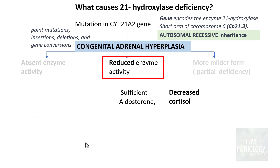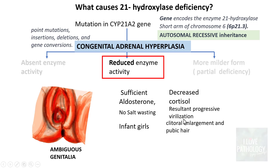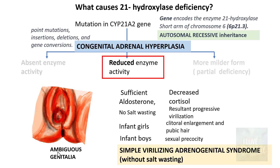When enzyme activity is reduced, aldosterone levels are sufficient but cortisol remains decreased, so feedback regulation is still impaired, and more ACTH is released. There is no salt wasting, but there is progressive virilization. In infant girls, this presents with clitoral enlargement and pubic hair. The most common presentation is ambiguous genitalia — when a newborn shows ambiguous genitalia, congenital adrenal hyperplasia should be suspected. Infant boys present with sexual precocity. This type is called simple virilizing androgenital syndrome without salt wasting.